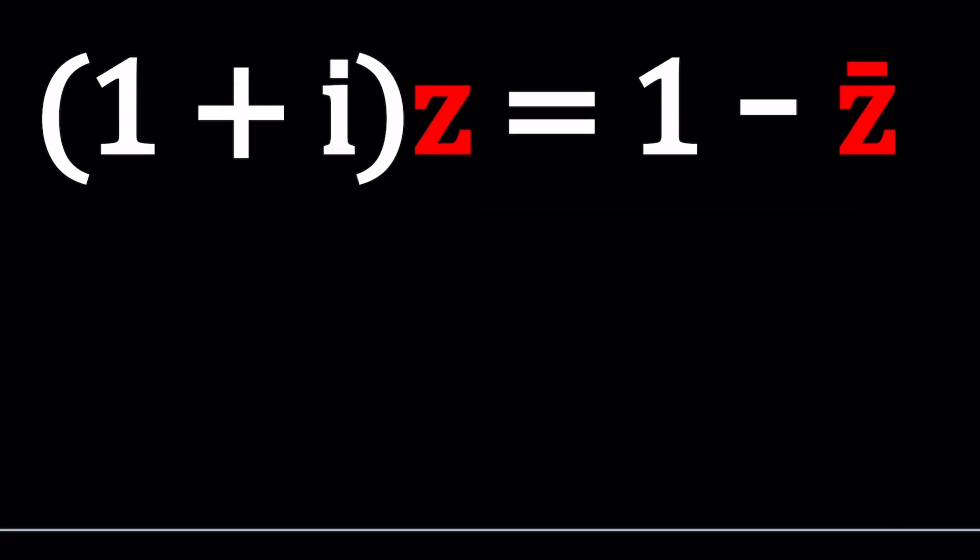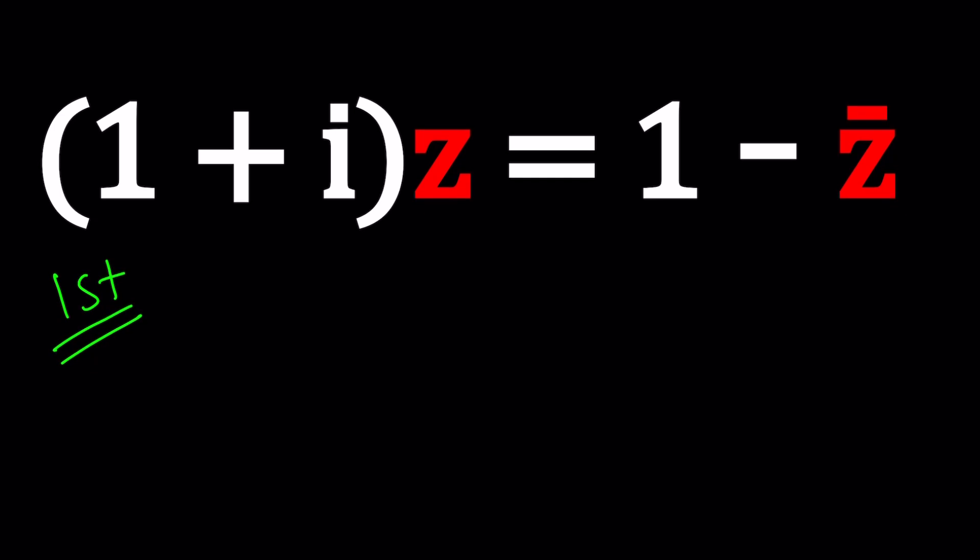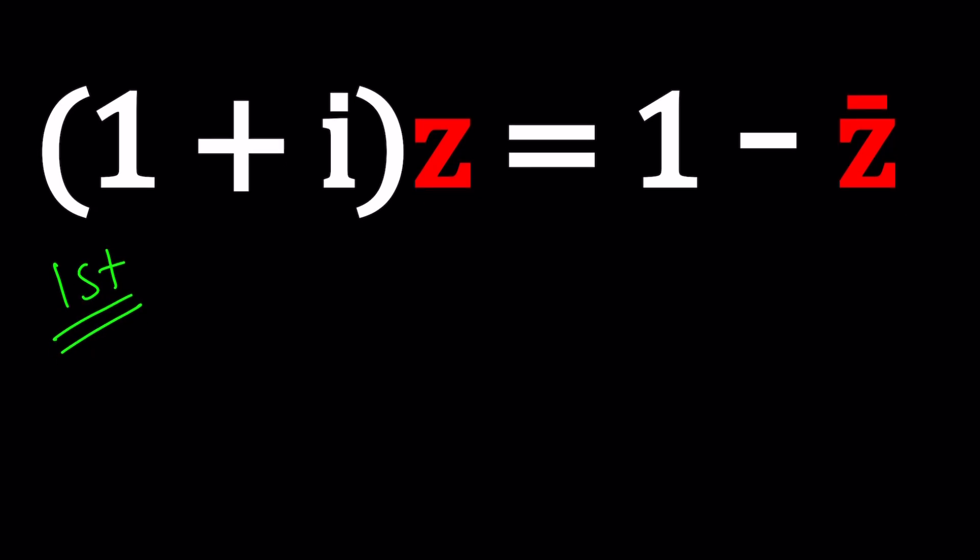So the first method for this problem is going to involve the name of this channel. That's why I named this channel that way, A plus BI, right? I think this is pretty unique. I do not know of any other channel that focuses on complex numbers. If you do know, please let us know, or maybe don't let us know, no competition, right? Competition is good. But I think there are no other channels like this one.